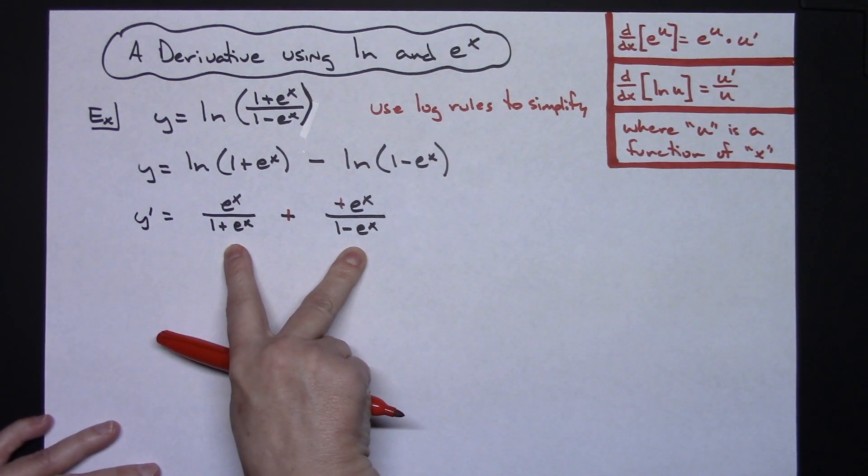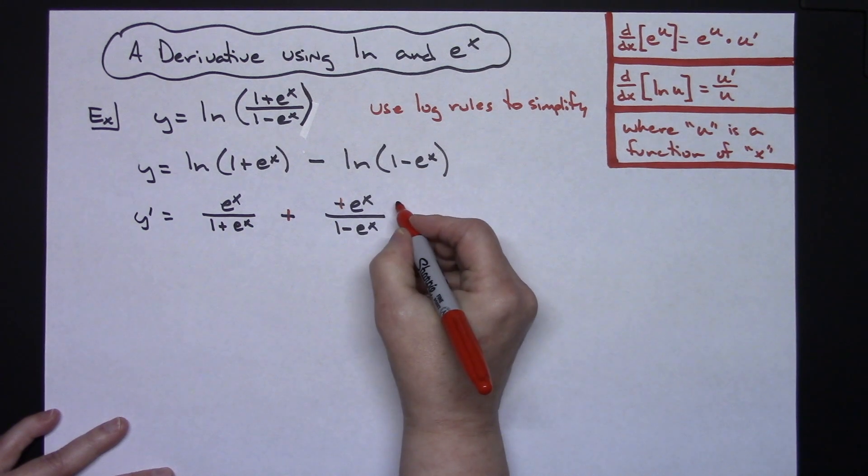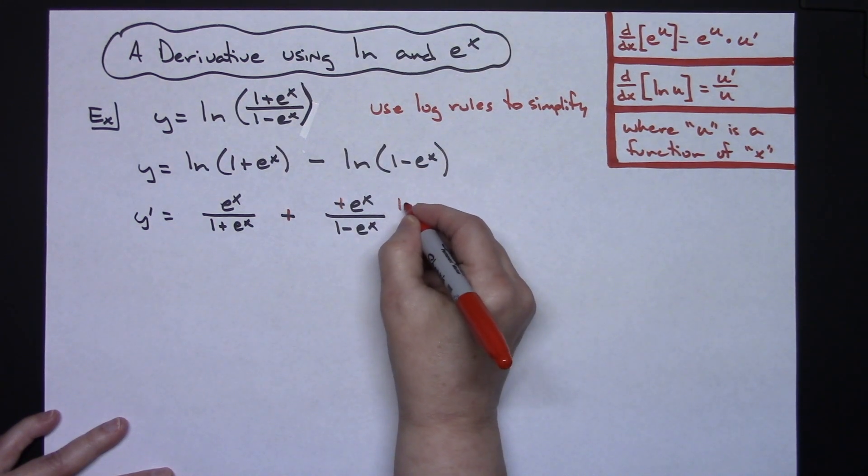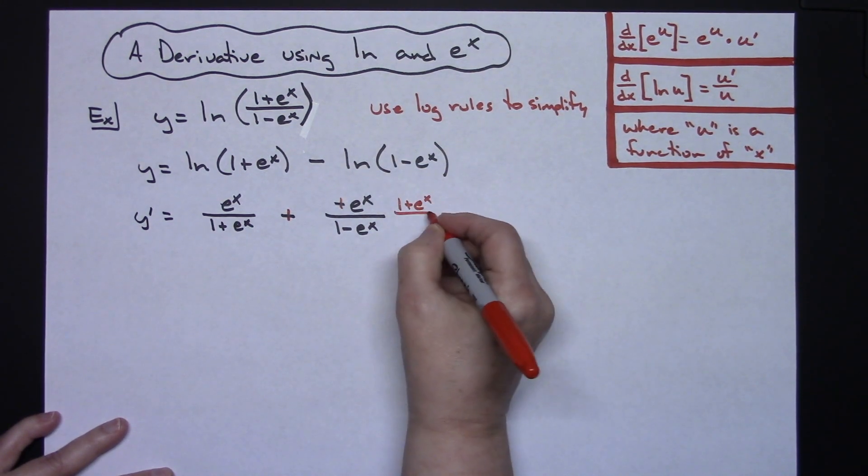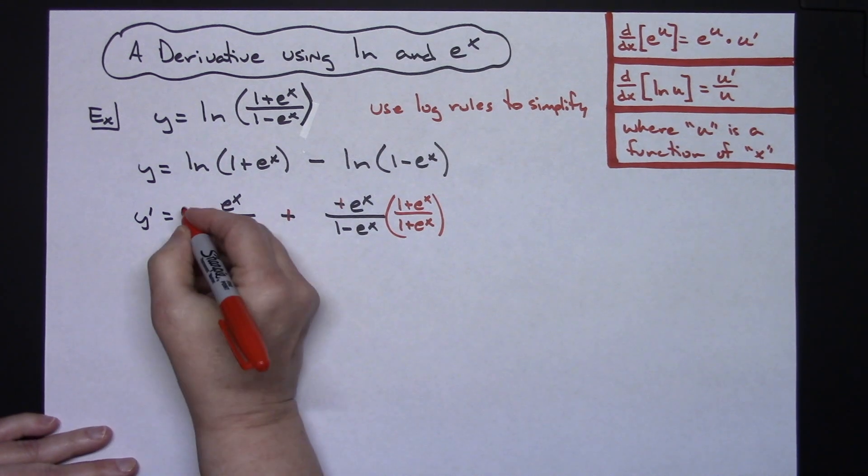Two rational expressions, I would get common denominators. So that means this fraction is going to have to be multiplied by 1 plus e to the x over 1 plus e to the x and that means this fraction would need to be multiplied by 1 minus e to the x over 1 minus e to the x.